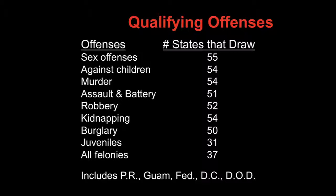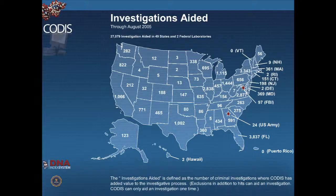What are the qualifying offenses to get on a DNA felon database? Sex offenses, offenses against children, murder, assault, battery, robbery, kidnapping, burglary, and juveniles — all felonies are included in most states. Having this database has aided investigations throughout the United States. A person commits a crime in Connecticut, escapes to Florida; later, DNA found in Florida reconnects back to a crime in Connecticut. Investigations have been aided through the connection of felon databases throughout the country.